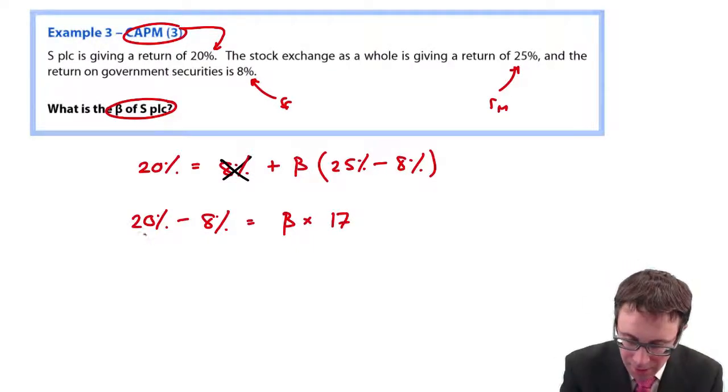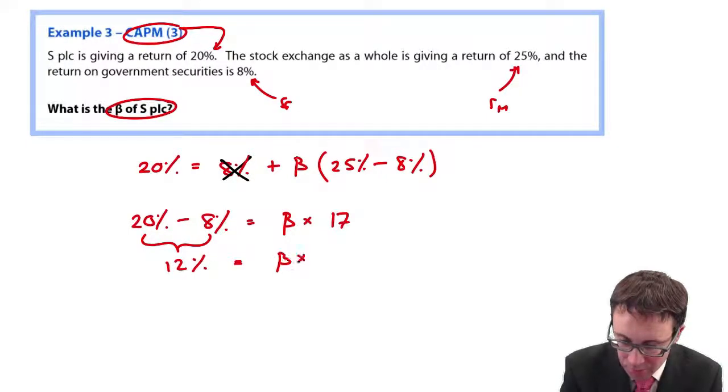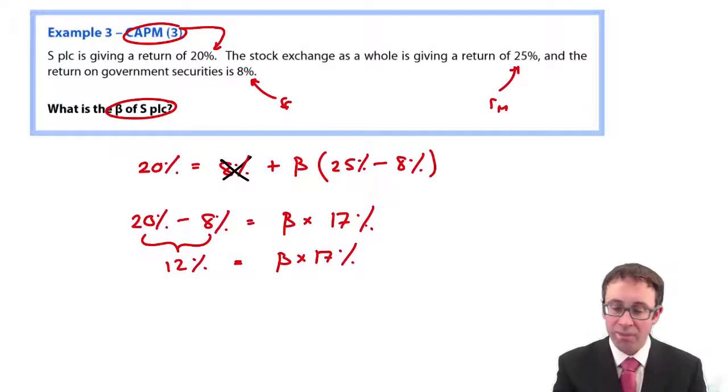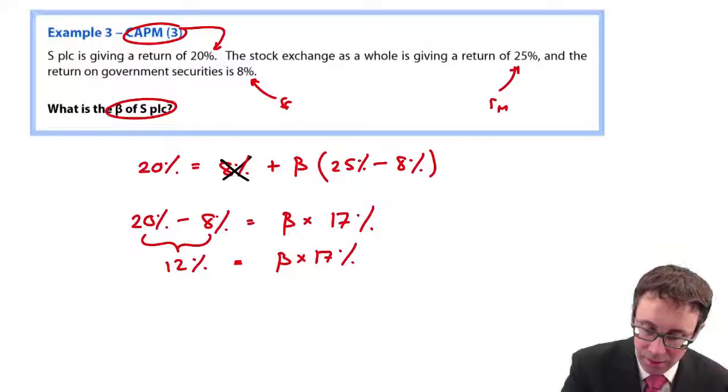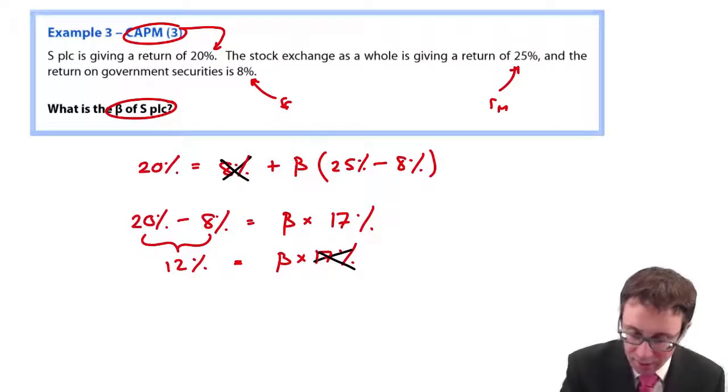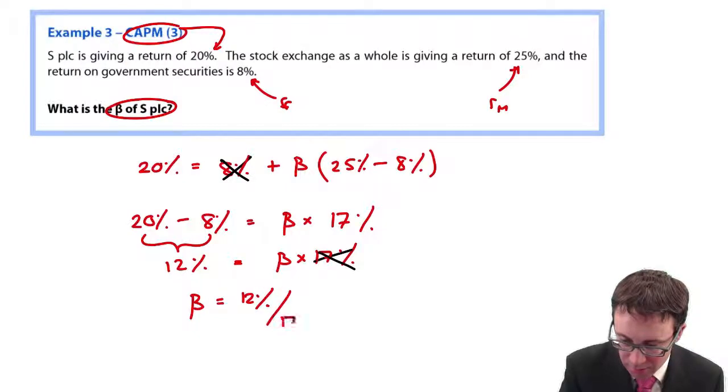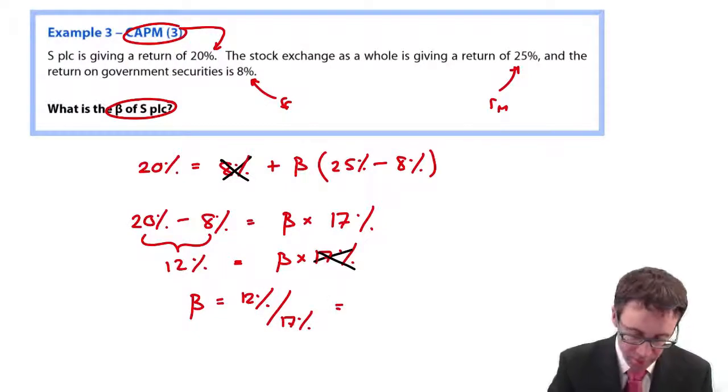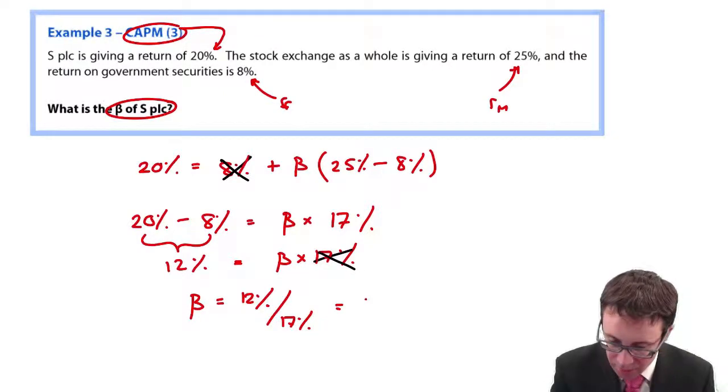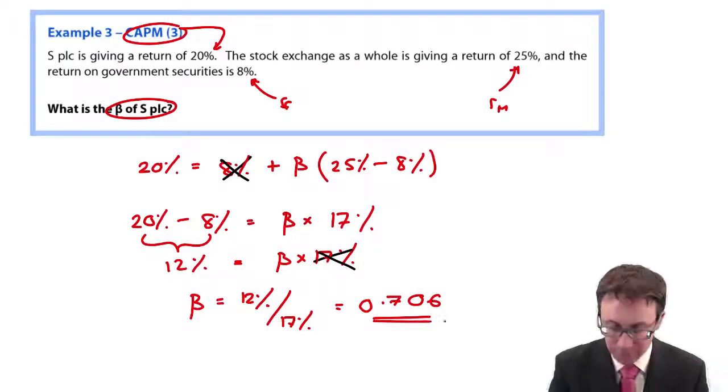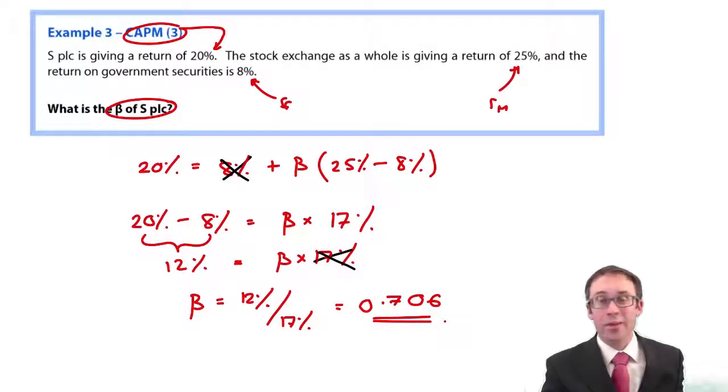That's then equal to 12 percent is equal to beta multiplied by 17 percent. So, if we divide both sides by 17, the 17 is cancelled there. And beta is 12 percent divided by 17 percent, which is there as 0.706. There we go. It's as simple as that.